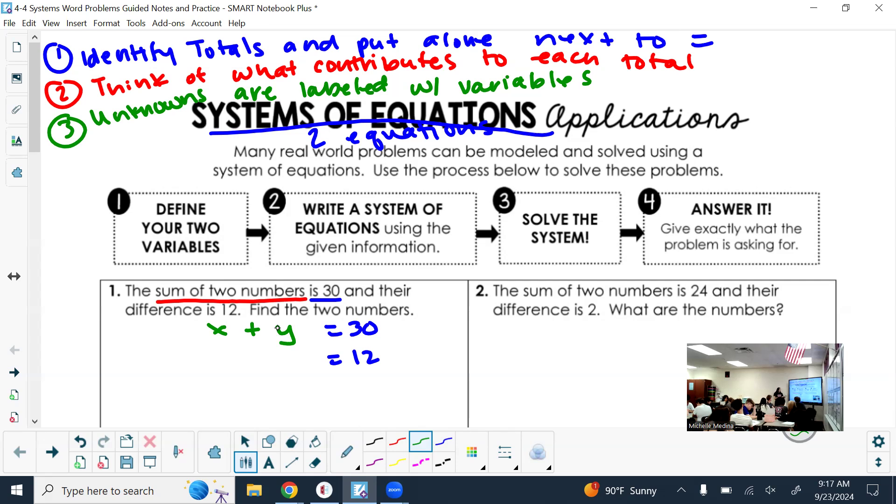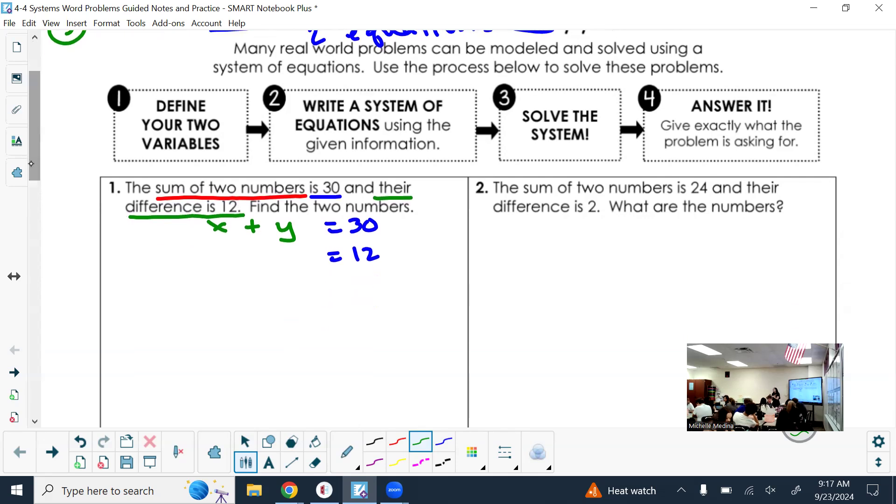Table eight, what does the word sum tell us to do? We're going to add the two numbers, which I don't know, so we'll use variables. Class, what variables do you want me to use? X and Y are good ones, especially if you're going to solve it like in Desmos. Table one, read the sentence of what contributes to the 12. Their difference is 12. How do I write that next to the equal sign? X minus Y.